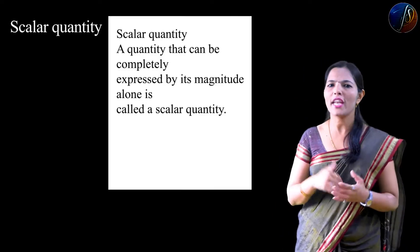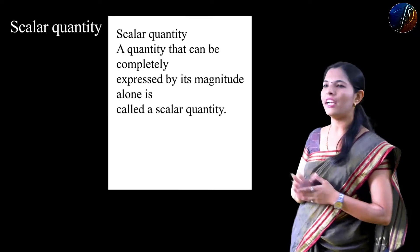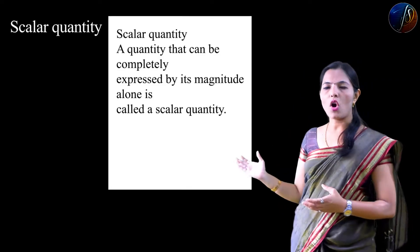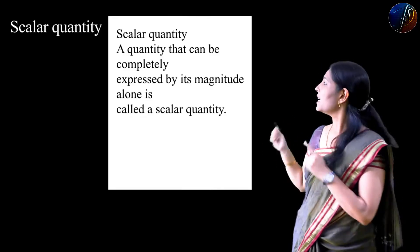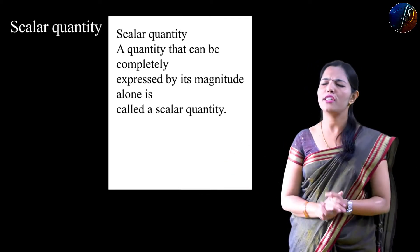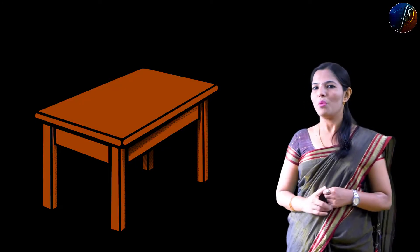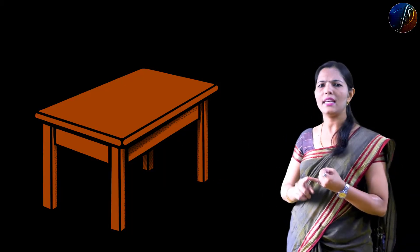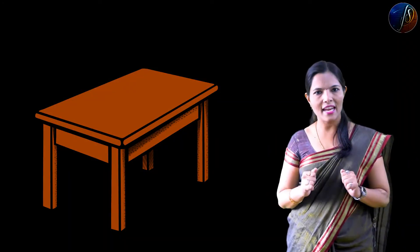So what is the definition of scalar quantity? The quantity which can be expressed with the help of only magnitude is called a scalar quantity. For example, there is a table in front of you. You can measure the length, breadth, and height of the table. You don't need any direction. That's why length, breadth, and height are scalar quantities — no direction is needed to measure them.